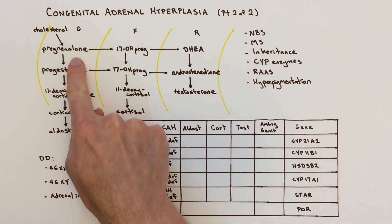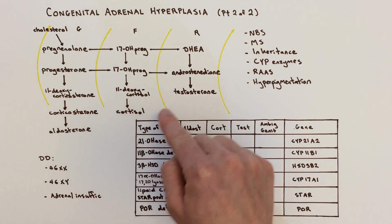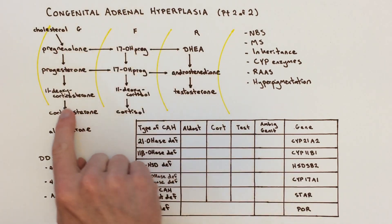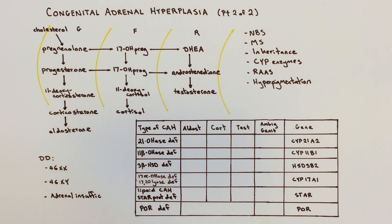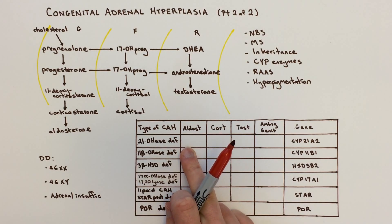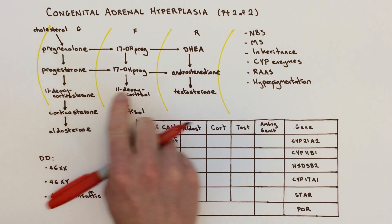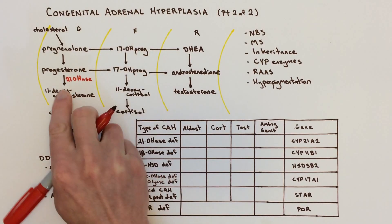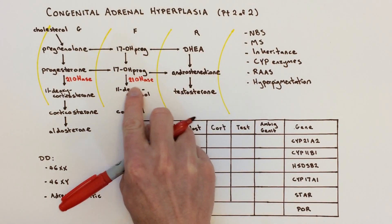It all starts with cholesterol, and you can follow the arrows, which generally go downward and rightward. This means that if there's a blockade at any step — an enzyme that's mutated or not produced — things tend to build up upstream or go around the blockade. We saw that with 21-hydroxylase deficiency. The enzyme acts right here and right here in the pathway — I'll write in 21-hydroxylase at both positions.